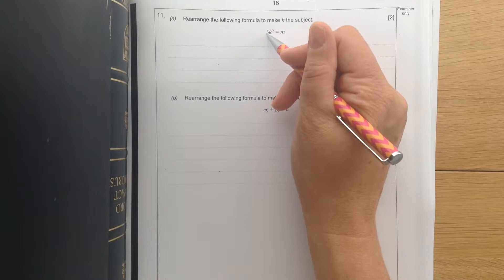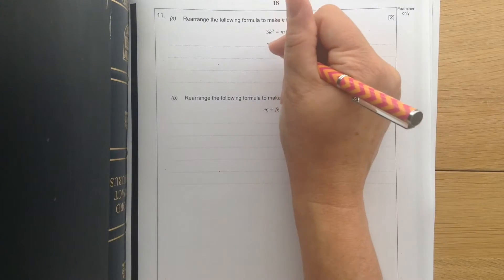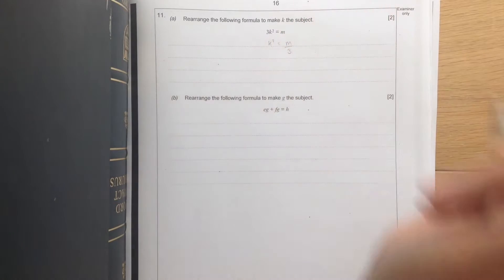So the first thing we're going to do is move the 3. So we're going to divide each side by 3. So we're going to get k squared equals m divided by 3.